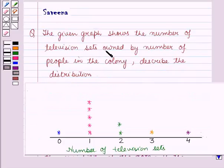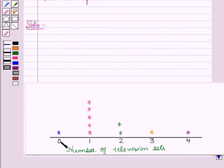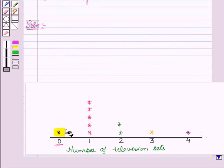Here we have to describe the distribution in the given graph. When we study the given graph, we find that the number of people having no TV set is 1.